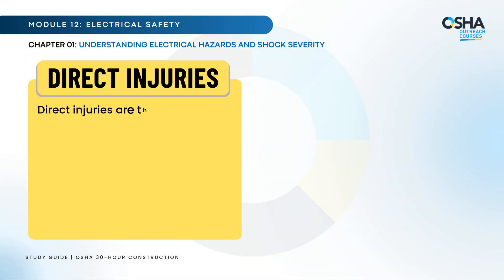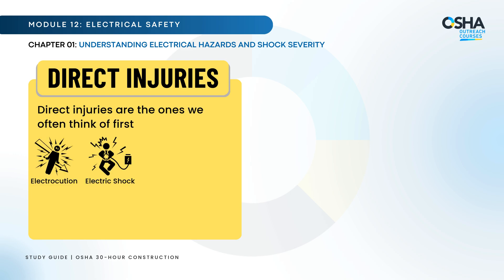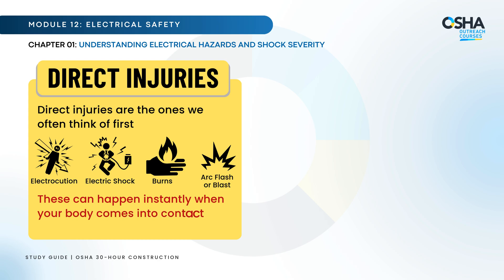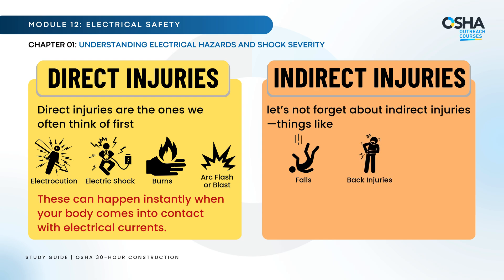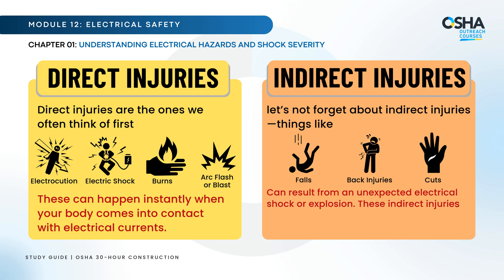Direct injuries are the ones we often think of first: electrocution, electric shock, burns, and arc flash or blast. These can happen instantly when your body comes into contact with electrical currents. But let's not forget about indirect injuries — things like falls, back injuries, and even cuts to your hands can result from an unexpected electrical shock or explosion. These indirect injuries happen when the shock causes you to lose your balance or react suddenly.